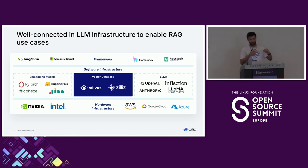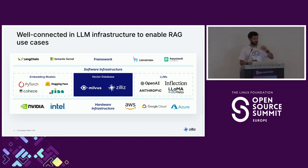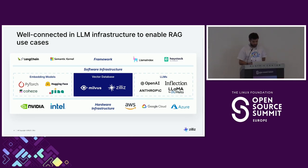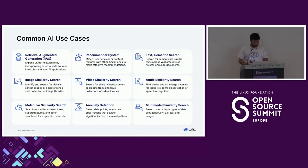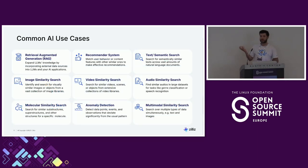We also have hardware partnerships directly with NVIDIA and Intel, meaning that we optimize vector search on some Intel CPUs and NVIDIA GPUs. So at one point of scale, sometimes you want GPU search — we have that with NVIDIA. People often ask me about the use cases for vector databases in general or AI.